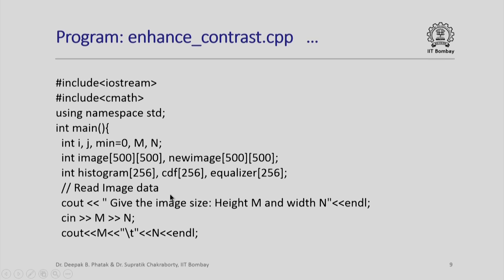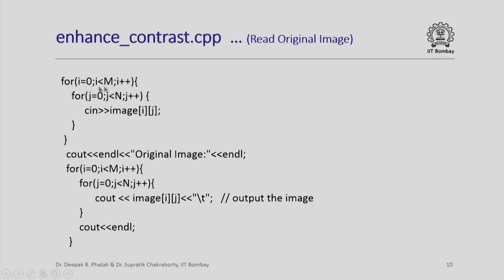I now read the image data. First, I collect the size. Notice that in the cout statement, I have used another interesting string backslash t. This is a special character which represents a tab character. You will notice in the program listing given in the courseware that the output contains values separated neatly by a tab. I now read the entire image using nested iteration i = 0 to M-1 and j = 0 to N-1. The original image is also produced as output just for you to verify that your data is correct.